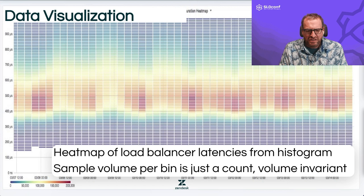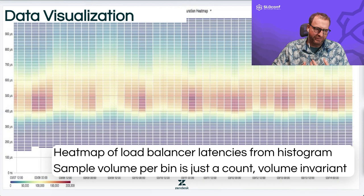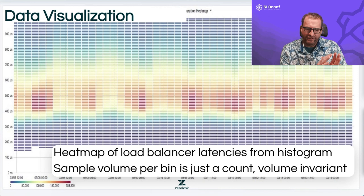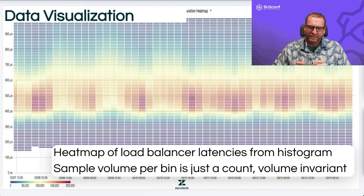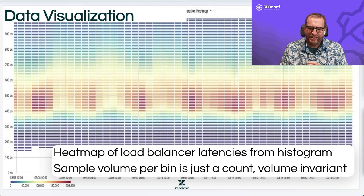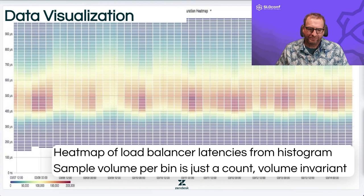For data visualization, I produced a heat map of load balancer latency. You can see how well this represents performance — the majority of requests fell within 500 microseconds, with time on the x-axis. There's a regular cadence at 24-hour intervals with a bright red impression on the heat map representing a lot more requests. This is volume invariant, meaning the count can go up per bin without changing the data size footprint. You really can't do this with a quantile sketch — it would take serious computing power and accuracy wouldn't be there.